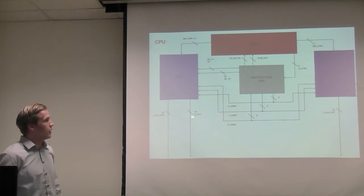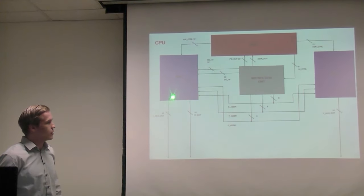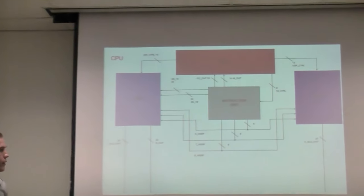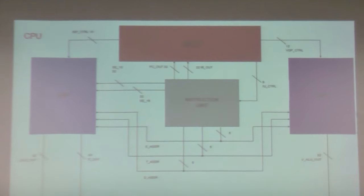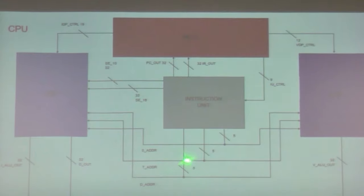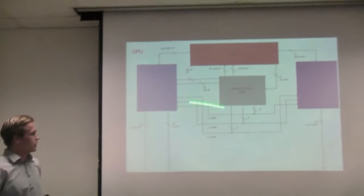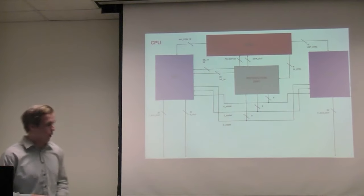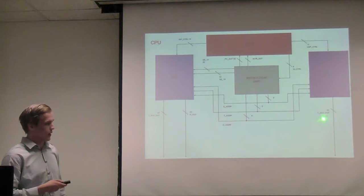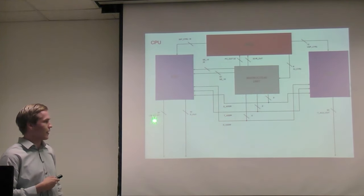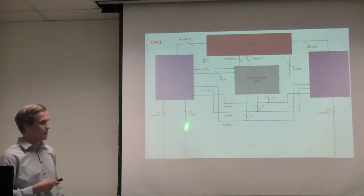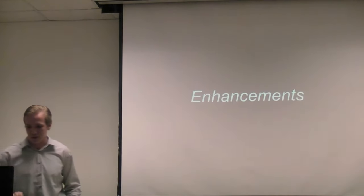Going on to our CPU, we have our MCU, the integer data path, the instruction unit, and the vector data path. RS, RT, and RD fields from the formats earlier are going to both data paths. We have a sign-extended 16 and a sign-extended 10. There are control signals going to each data path. The vector data path only has vector ALU out, while the integer data path has integer ALU out and D-out coming from the RT register.